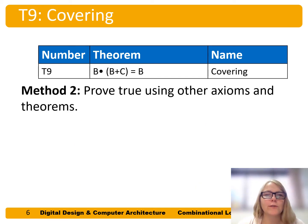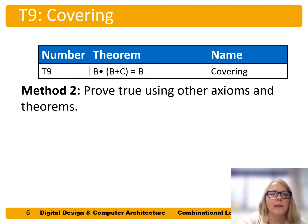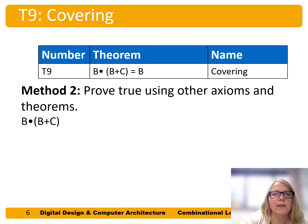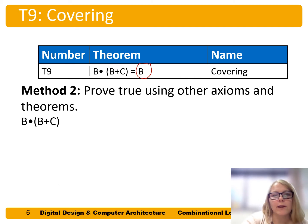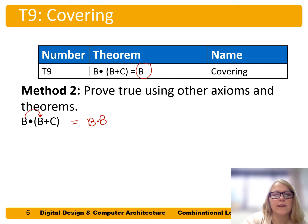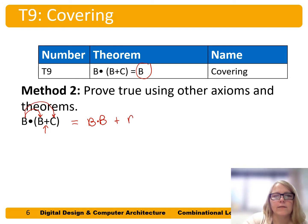We can also prove this theorem is true using other axioms and theorems. We start with B and (B or C) and try to make it look like the other side of the expression. We begin by using distributivity — distributing B across that AND expression — to get B·B or B·C. That step uses distributivity.